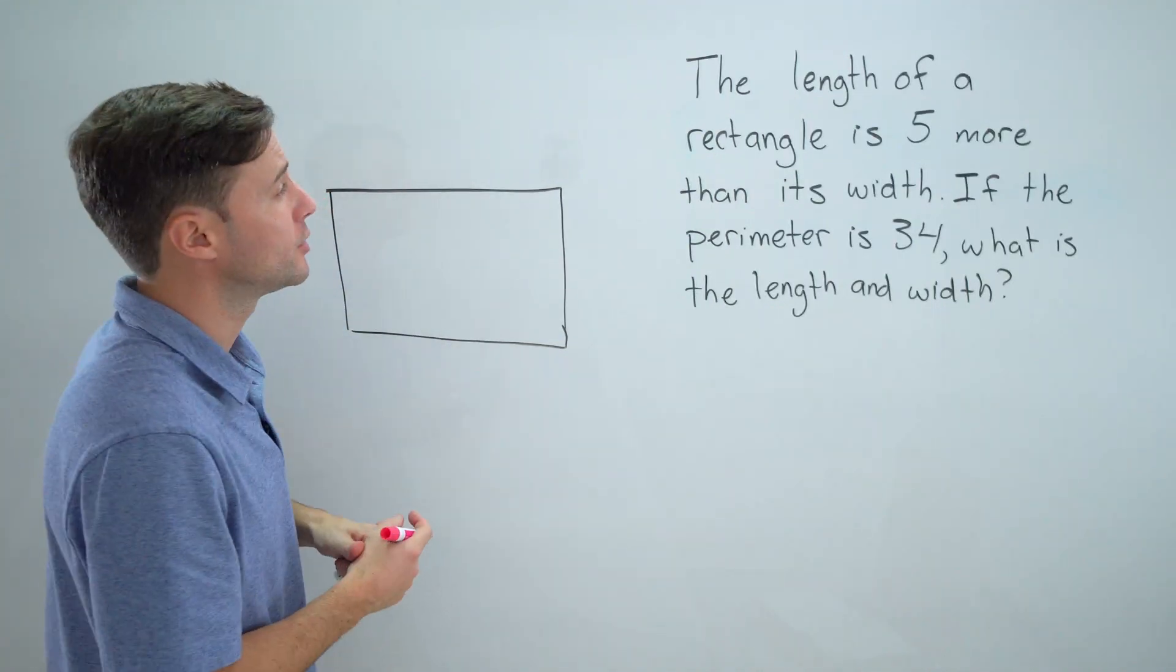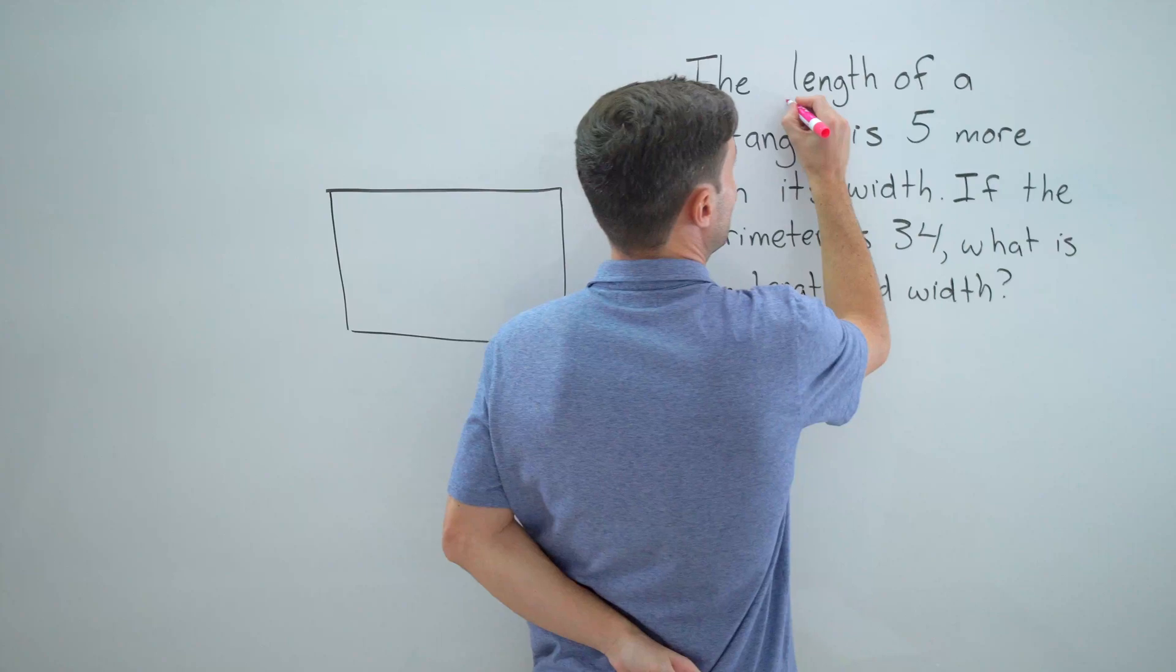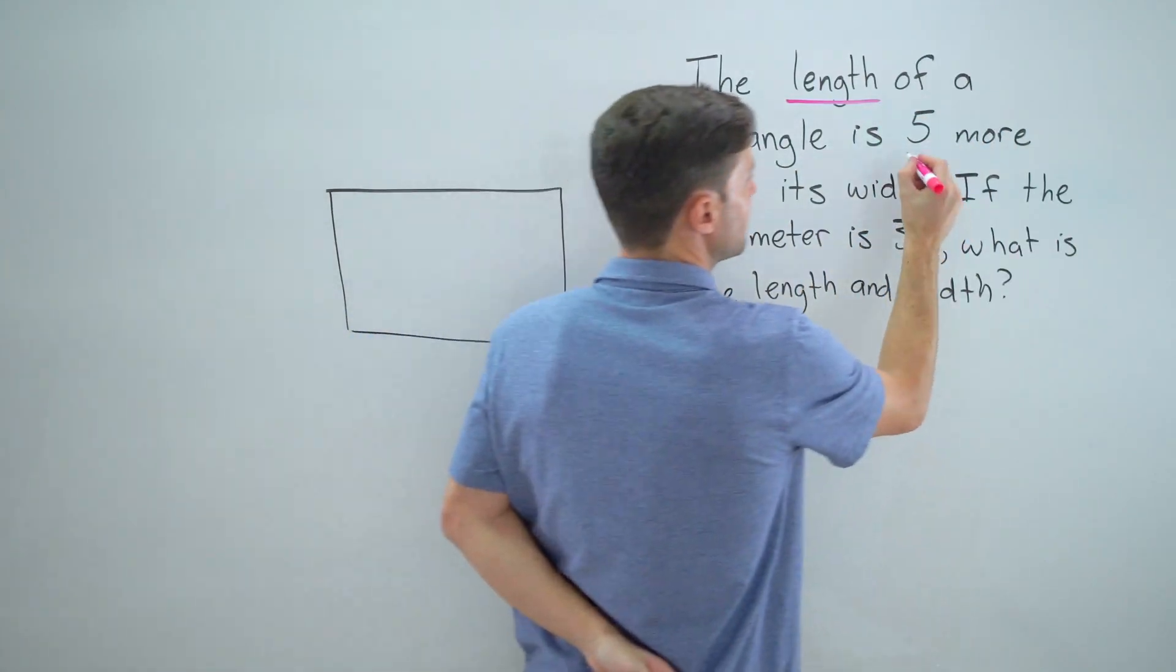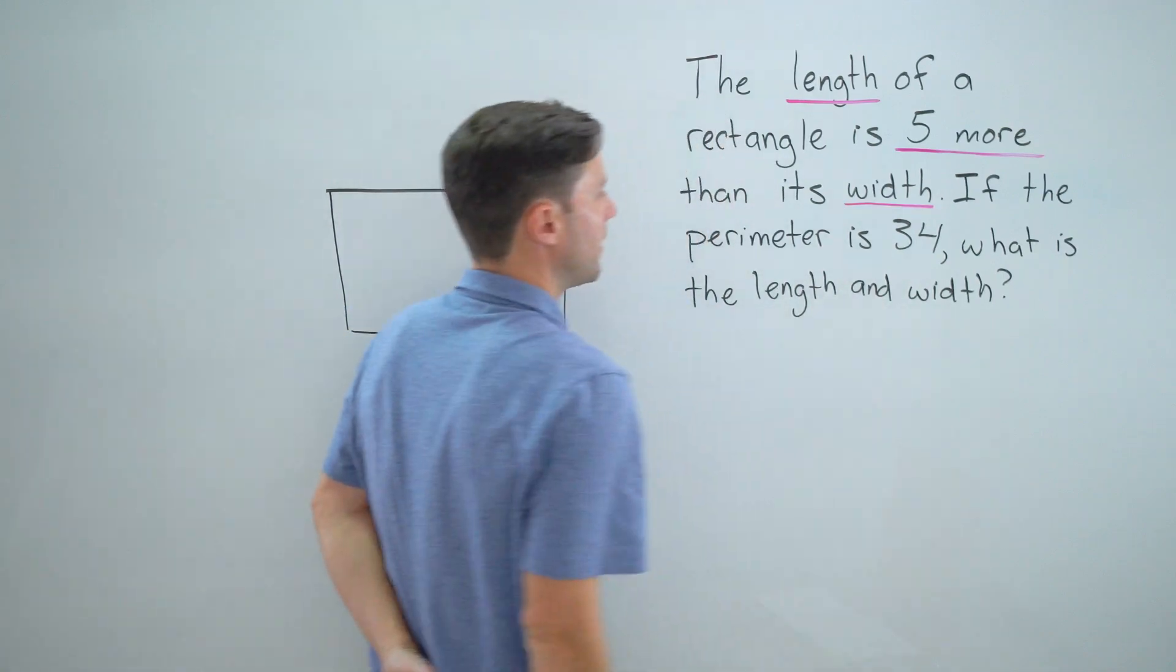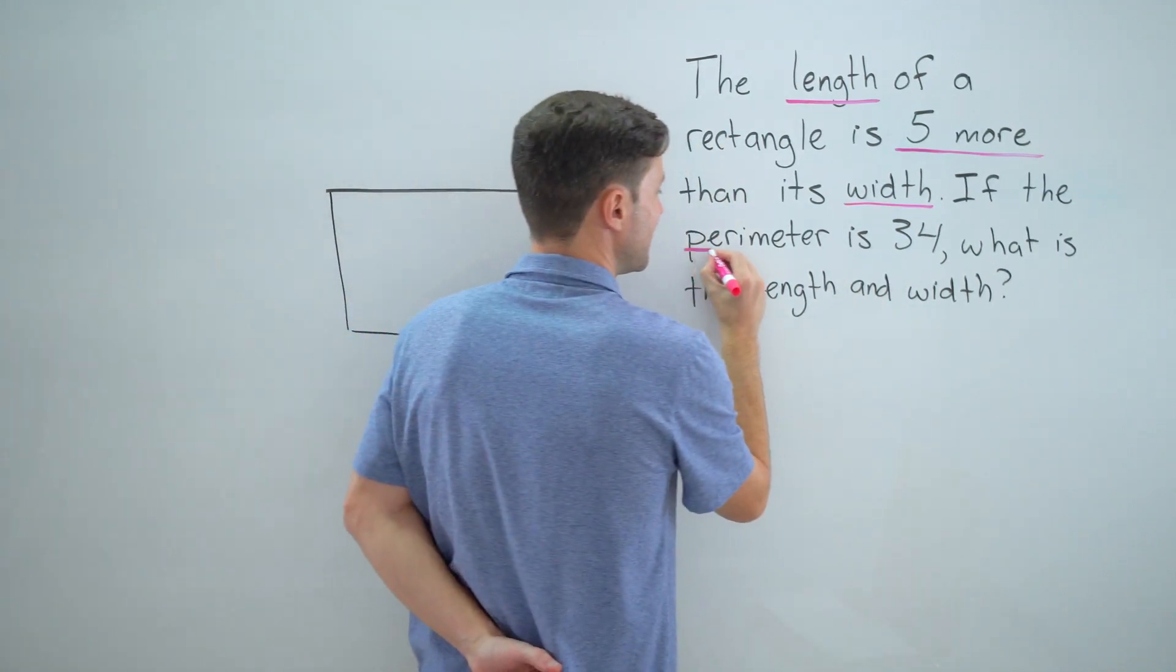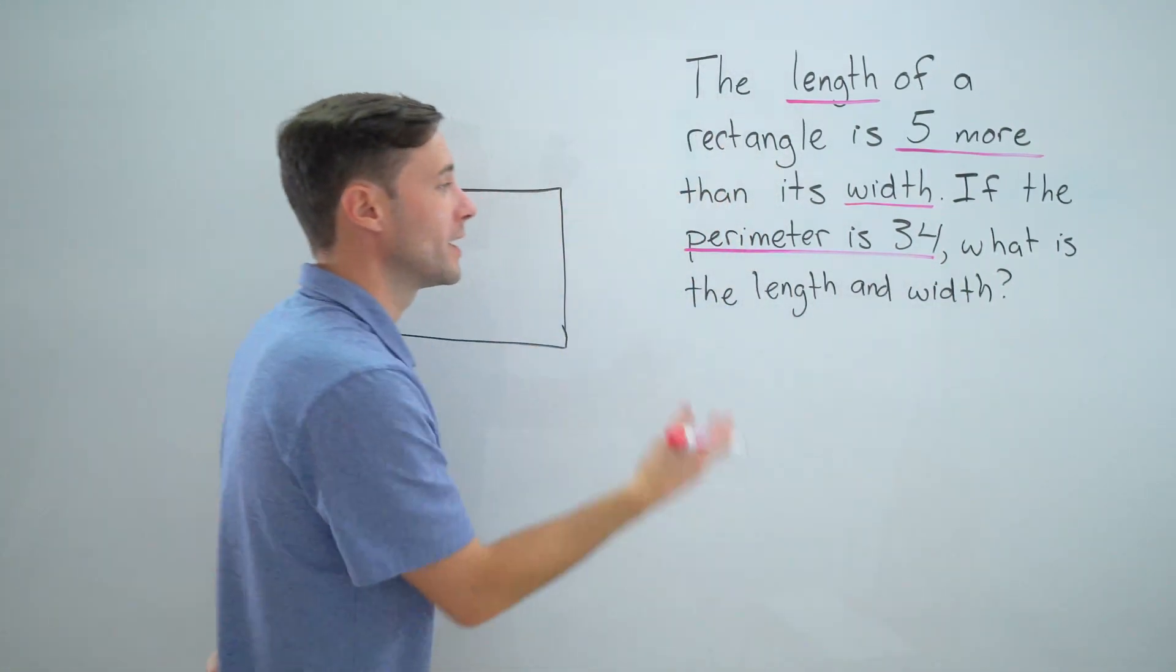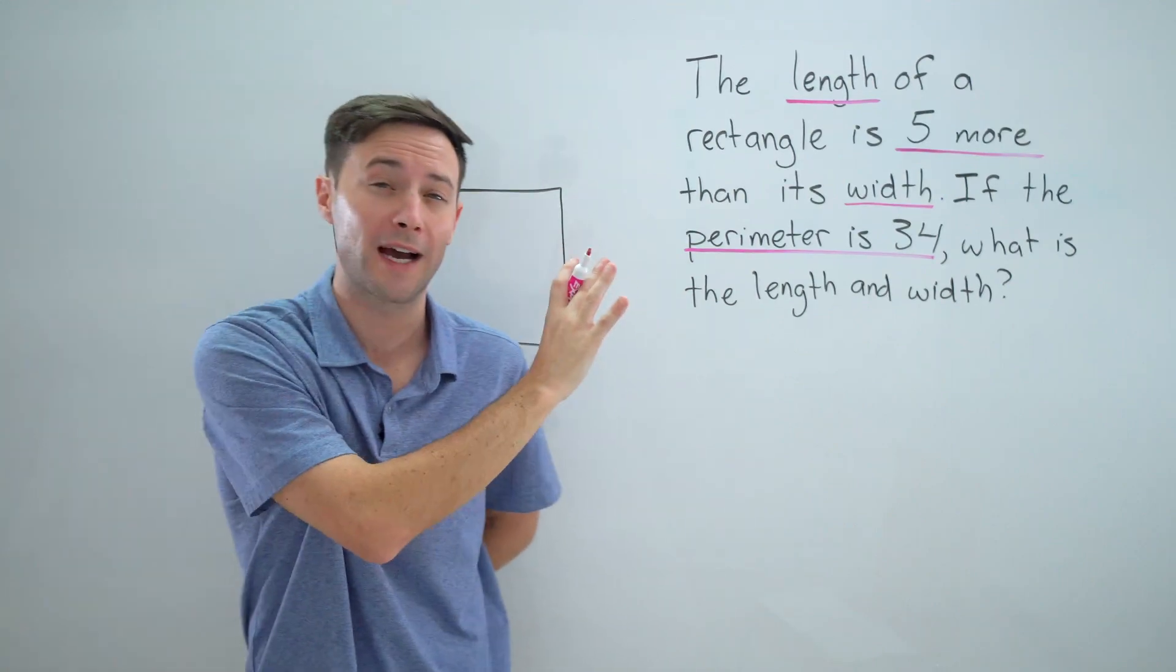It says the length of the rectangle is five more than its width, and if the perimeter is 34, what is the length and width? Those are the keywords I'm looking at.